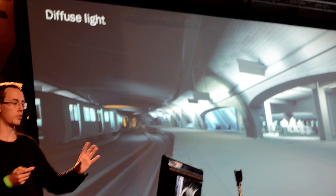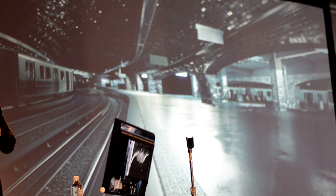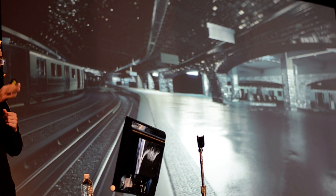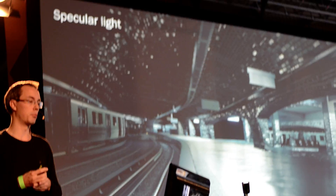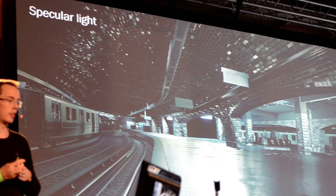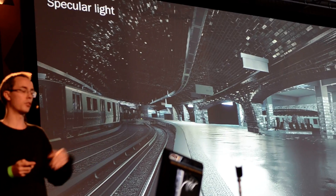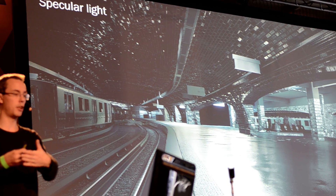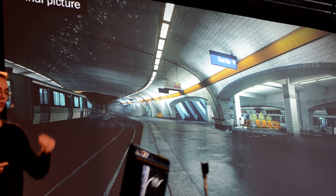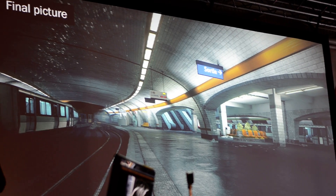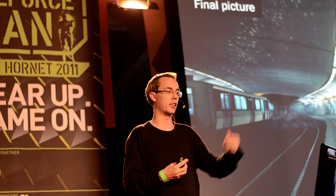This is the diffuse lighting. We also have a specular lighting pass done at the same time, calculating the more direct reflection of lights, using multiple methods. Some lights are just effective for specular. Some have environment maps. The diffuse and the specular are rendered at the same time and then combined into a single final picture, where you have the diffuse lighting, the specular lighting, and the colors from the textures as well.